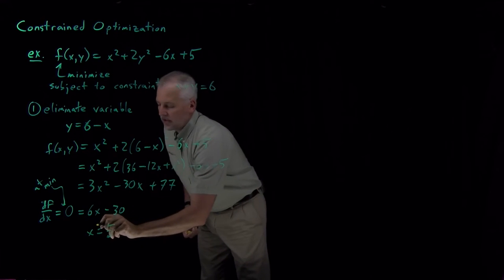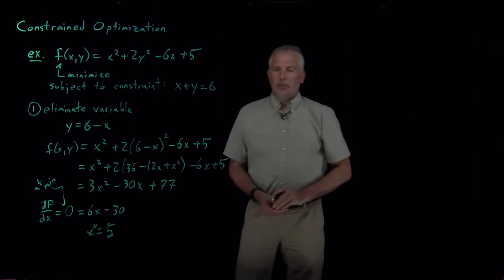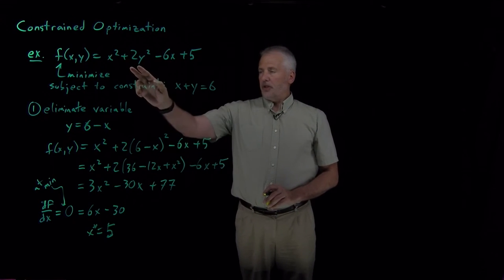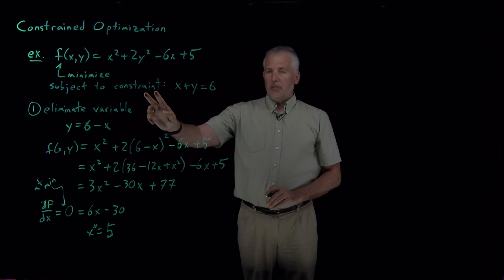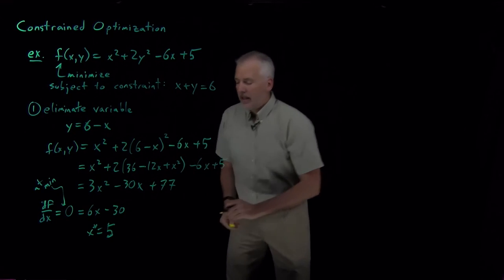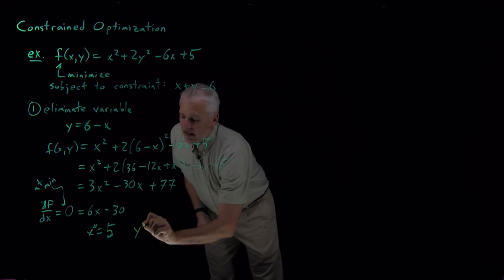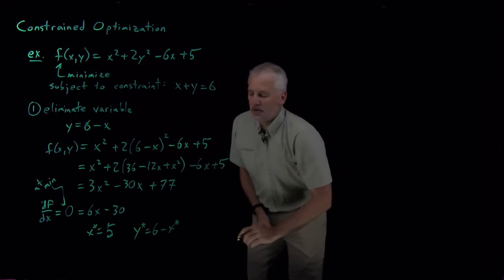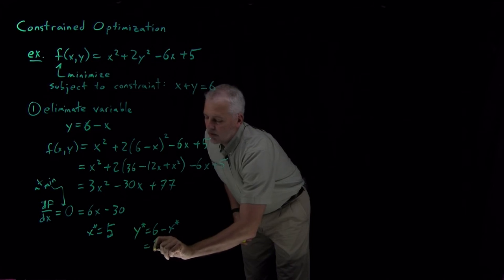So that's x*, the value of x at the minimum. The value of the function when it's correctly obeying the constraint and it's at its minimum. And then y at the minimum is 6 minus that value of x that we've just determined. So 6 - 5 = 1.